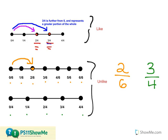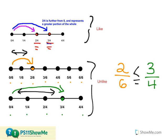I'm going to locate the three-fourths, and then reason the three-fourths distance from zero, or my starting point. And when I compare the distance from two-sixths to zero and three-fourths to zero, it's very clear to me that three-fourths is the greater fraction. So my greater than, less than symbol is going to open up to three-fourths.